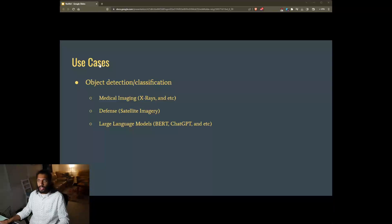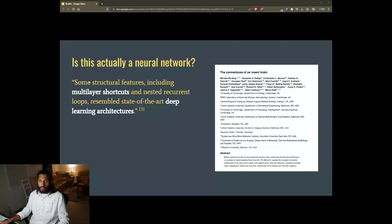The last thing I have for you is a bonus, a biological representation of ResNet. In early 2023, a group of researchers, Michael Winding et al., published a paper on their findings after mapping the synapses of ants, basically the structure of ants' brains, and found a ResNet-like structure. Specifically, they said the brain's most recurrent circuits comprise the input and output neurons of the learning center. Some structural features, including multi-layer shortcuts and nested recurrent loops, resembled state-of-the-art deep learning architectures.